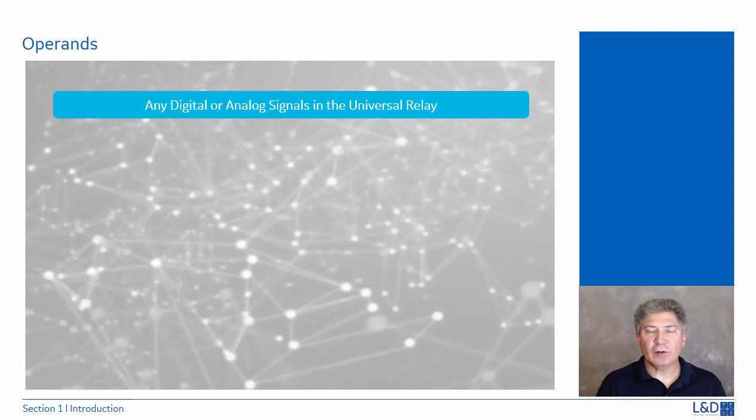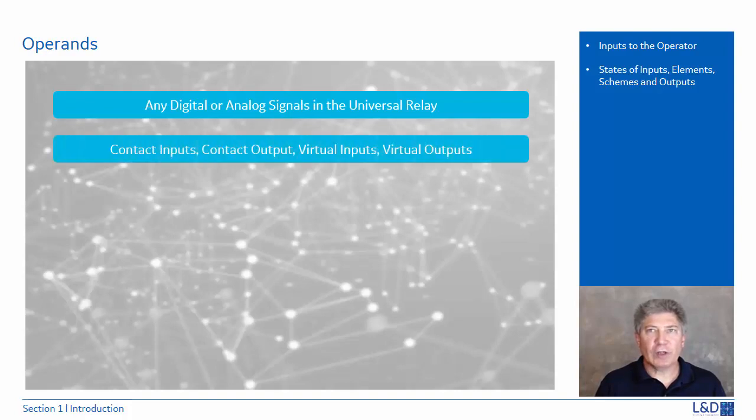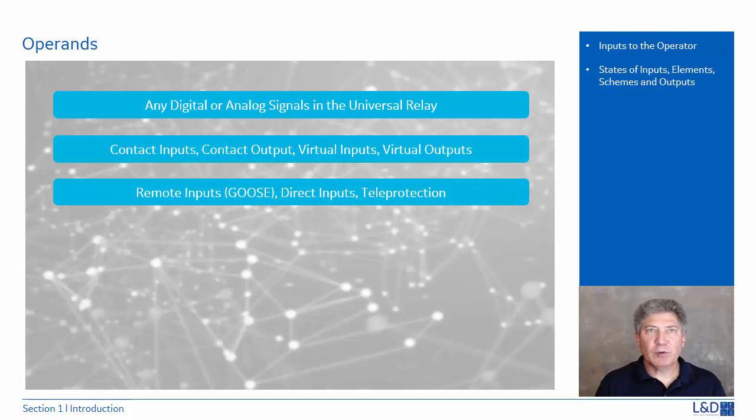Operands are any digital or analog signal available in the UR. The operands are inputs to the operators. They represent the state of inputs, elements, schemes, and outputs. Signals such as the contact I/O, virtual I/O signals, remote inputs for the GOOSE, Boolean, DPS, and analog, direct inputs.